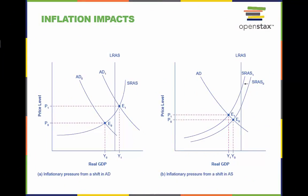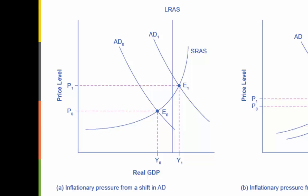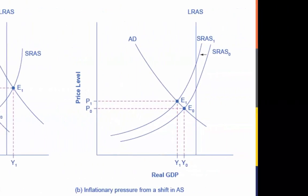Here is how inflation can occur from a shift in either aggregate demand or aggregate supply. A shift in aggregate demand from AD0 to AD1, when it happens in the area of the aggregate supply curve that is near potential GDP, will lead to pressure for a higher price level and inflation. The new equilibrium E1 is at a higher price level P1 than the original equilibrium. A shift in aggregate supply from AS0 to AS1 will lead to a lower real GDP and to pressure for a higher price level and inflation, with the new equilibrium E1 at price level P1 versus the original equilibrium E0 at price level P0.